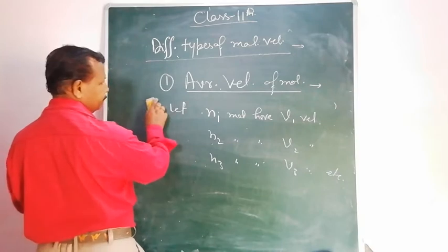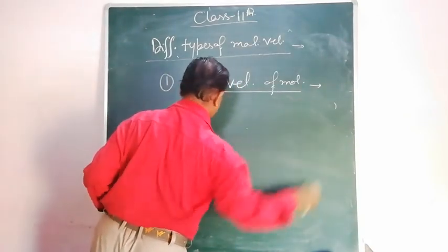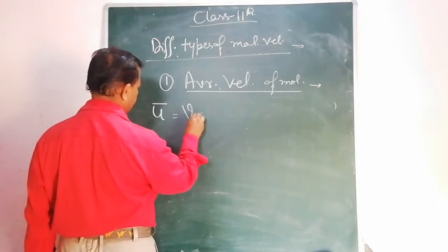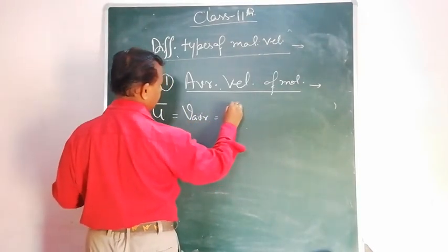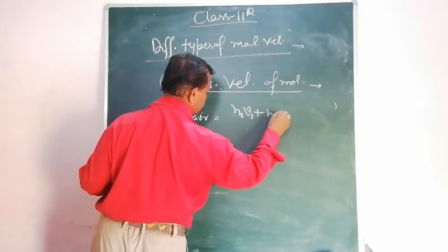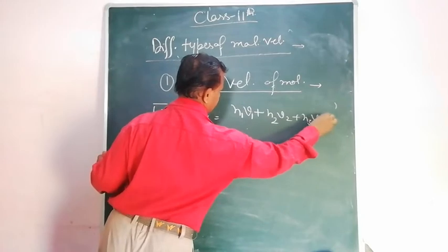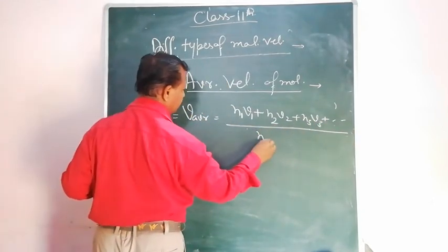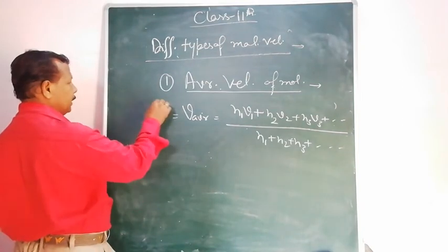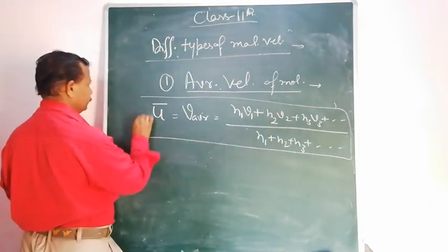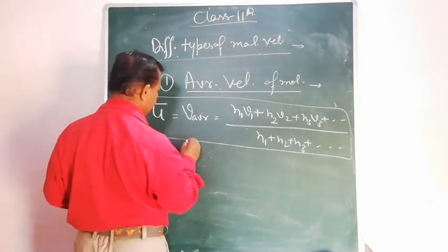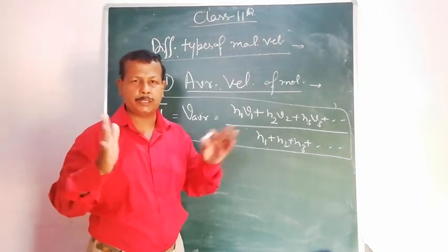That is, we can write here: the average velocity is represented by U-bar, or V-average, equal to the sum of the number of molecules multiplied by their velocity — N1V1 + N2V2 + N3V3 and so on — upon the total number of molecules. This is the average velocity of the molecules.